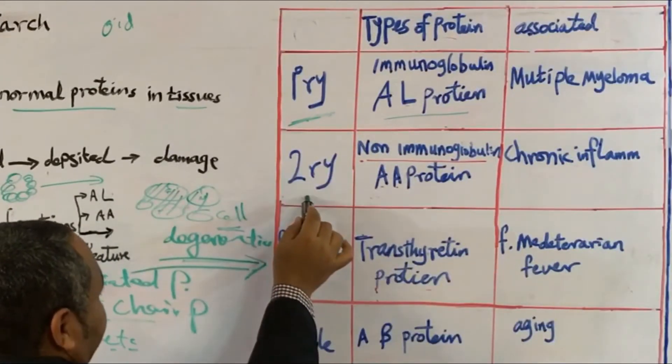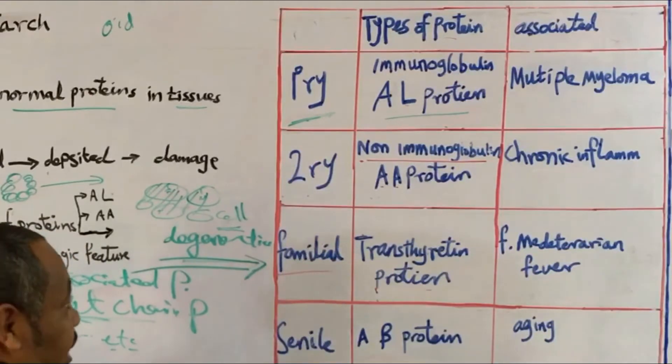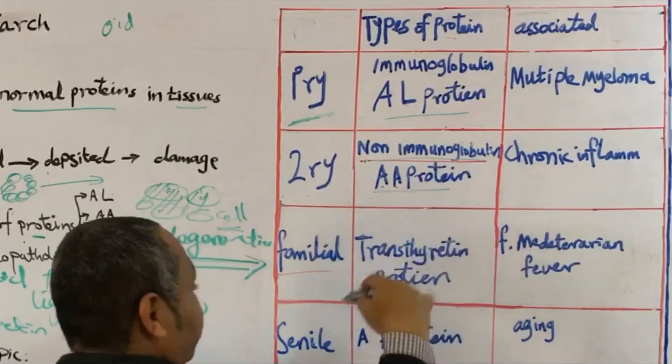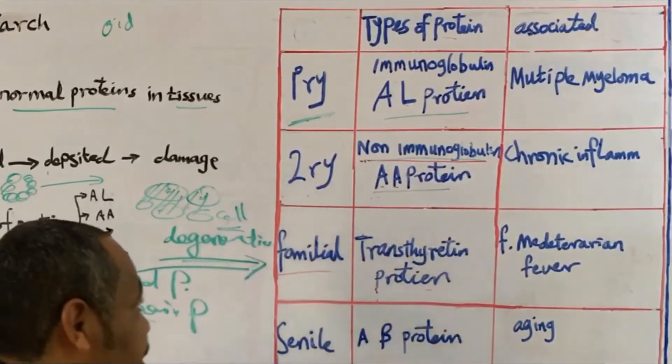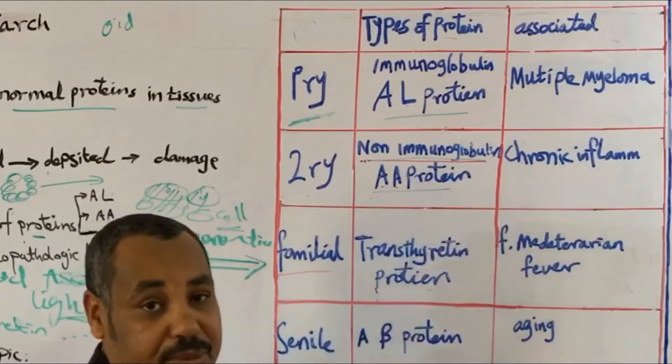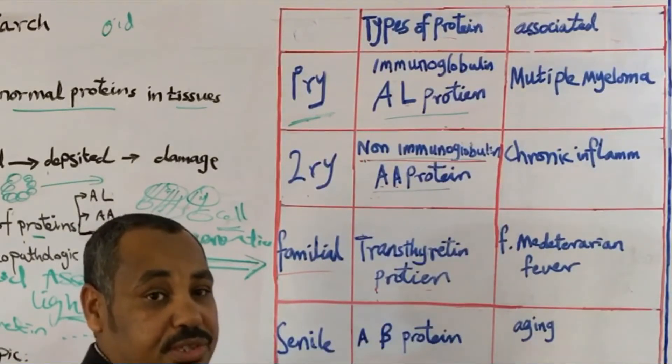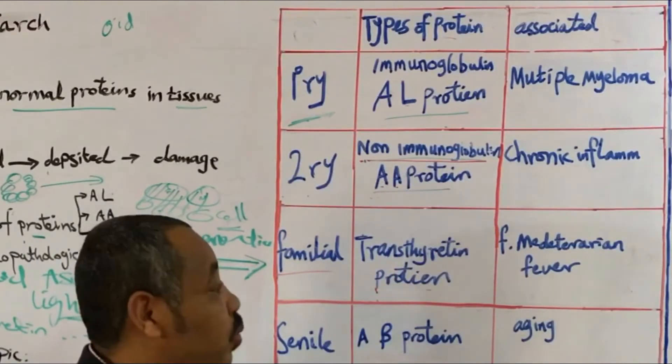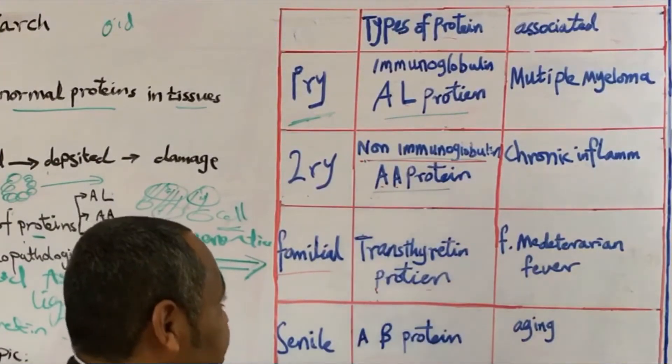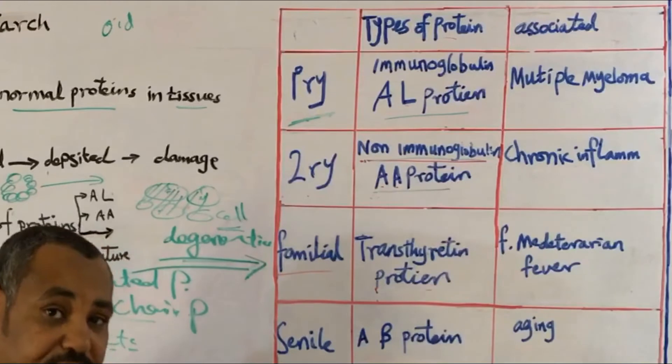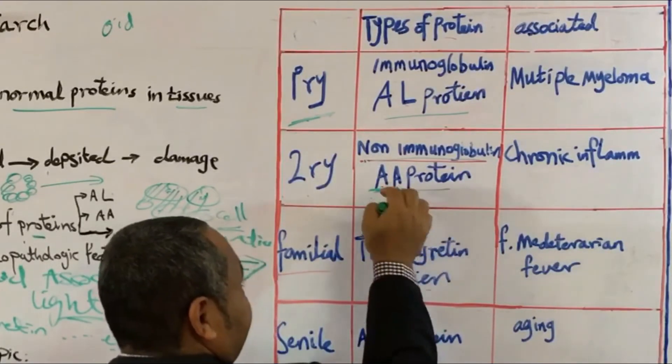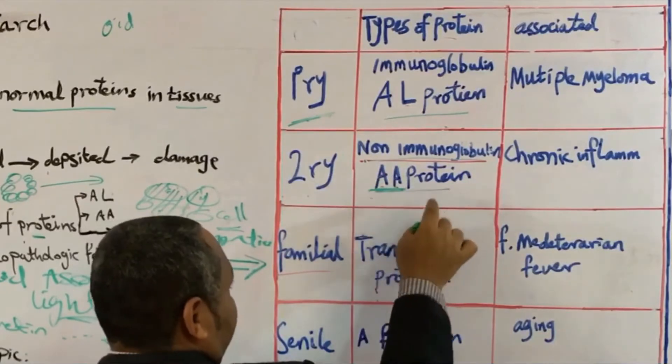The second one is secondary amyloidosis. And here there is no immunoglobulin. And actually this is protein produced in the liver, and it's called some sort of acute phase protein, which is produced in chronic inflammatory processes like tuberculosis or malignancies or whatsoever. Any chronic inflammatory process which takes place in our bodies will result in increased acute phase protein from the liver.